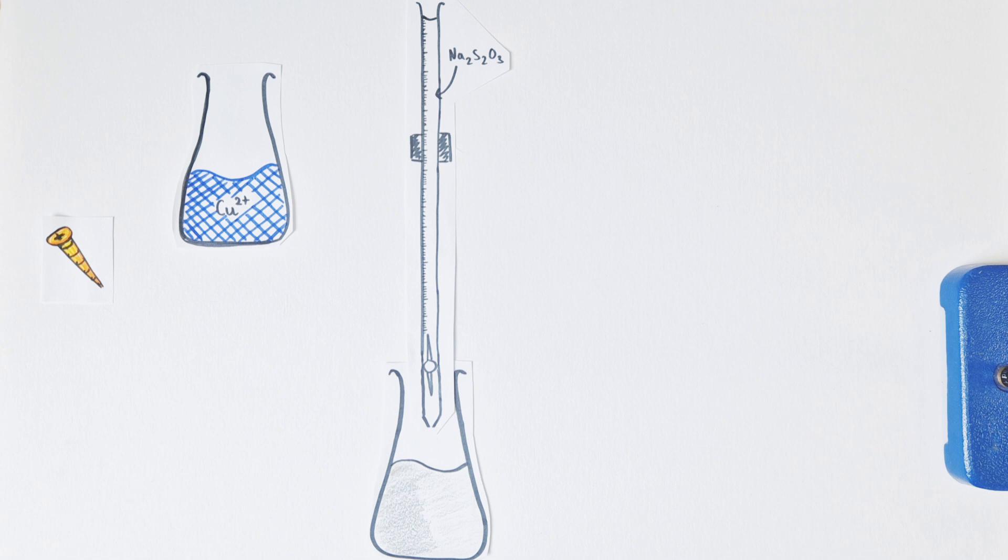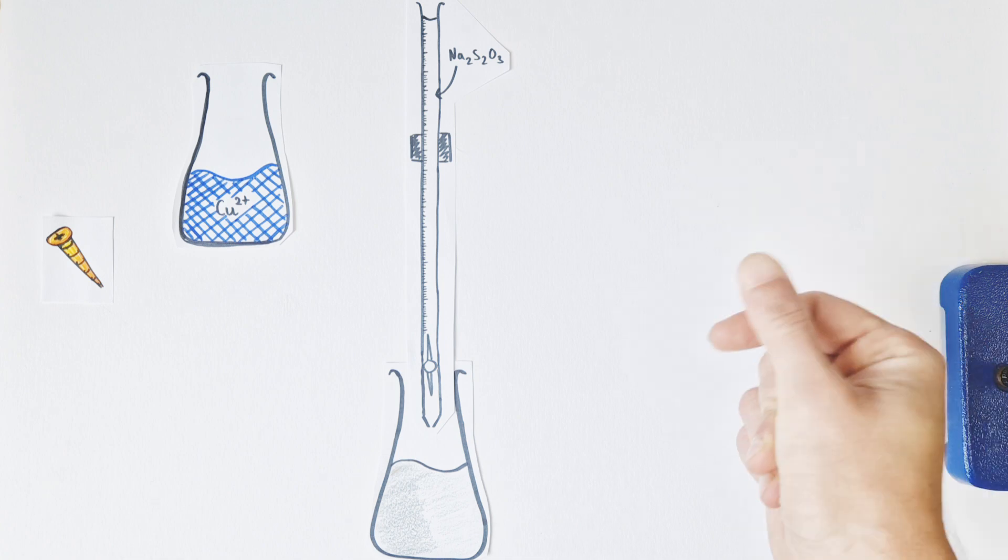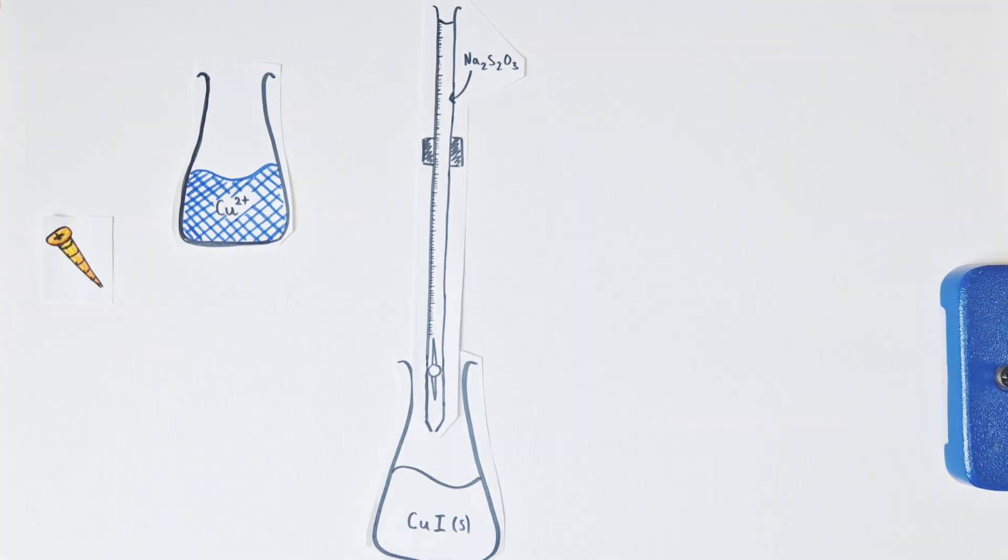Because iodine reacts with starch to form a blue-black color, we get a deep black appearance to our conical flask. This is much easier to indicate the endpoint. As we add a little bit more of the thiosulfate solution, we're looking for that blue-black color to vanish and disappear and be left with a white color like this. And that white color is indicative of only the copper iodide precipitate, which is a white solid, being present.